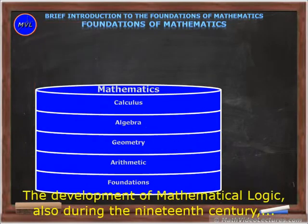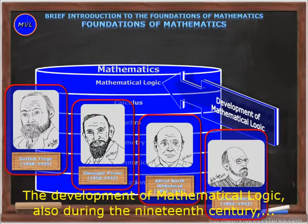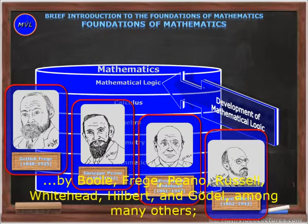the development of mathematical logic, also during the 19th century by Boole, Frege, Peano, Russell, Whitehead, Hilbert and Gödel, among many others,